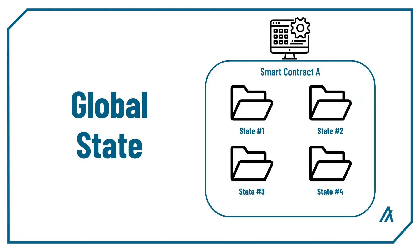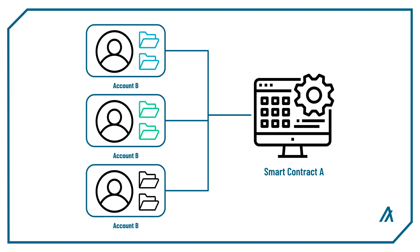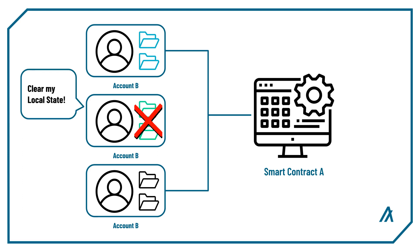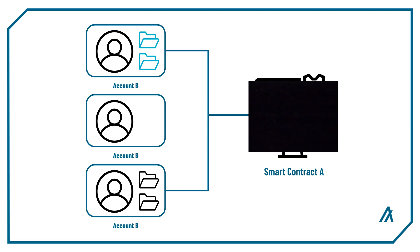Global state is state that is recorded on the smart contract. It is usually used to keep track of data used by the application and doesn't have to vary per account that interacts with the smart contract. Local state, on the other hand, is recorded on accounts and each account can have their own unique local state. It is often used to keep track of data specific to each account, but the account can always forcefully erase local state by sending a clear state application transaction. So local state is not best suited for states that are core to the application's functionality. For this, I recommend using the box storage.